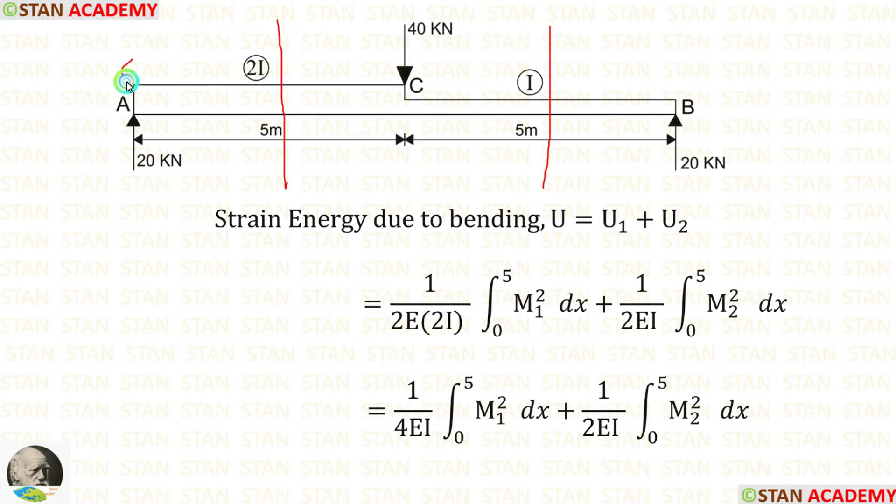The limits for the first section will be 0 to 5. The limits for the second section also, 0 to 5. For the first part, the moment of inertia is 2i. So, instead of i, we have to apply 2i in the strain energy formula. 2 into 2, we will get 4.